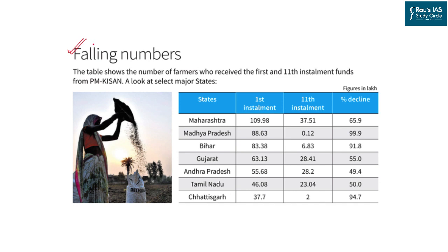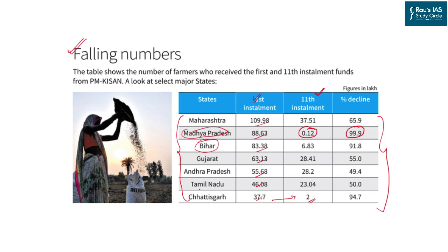As per the RTI filed with the Ministry of Agriculture, the data shows that while many farmers received funding in the first installment of 2019, poorer states like Bihar and Madhya Pradesh received comparatively less. By the 11th installment, Madhya Pradesh showed a 99.9% decline — meaning of 1,000 people receiving funds initially, only 10 are receiving now. Chhattisgarh, also a poor tribal state, shows a similarly high decline. This is a matter of concern because if the government plans to replace minimum support price with cash transfers, such poor performance in the existing scheme is a bad sign.